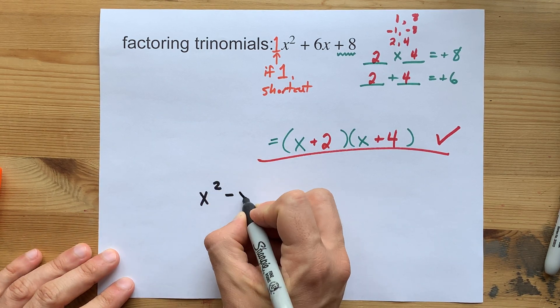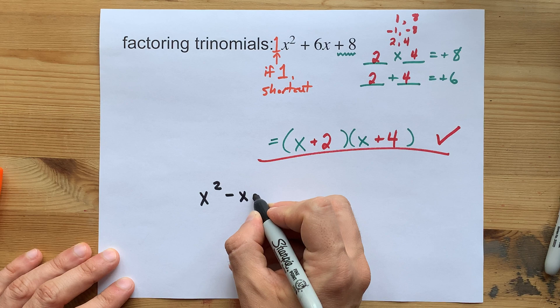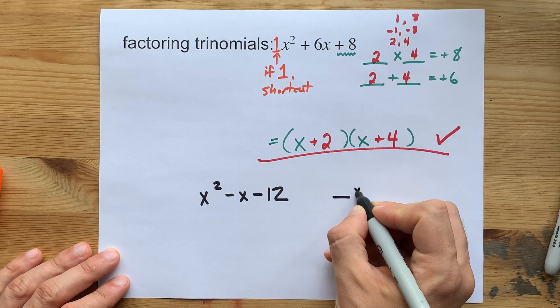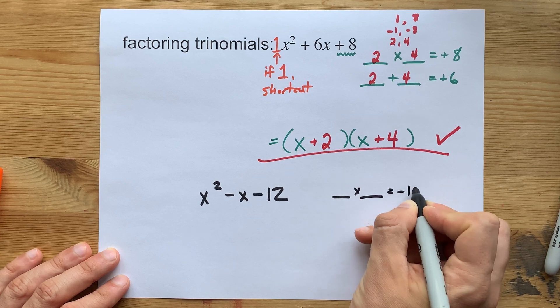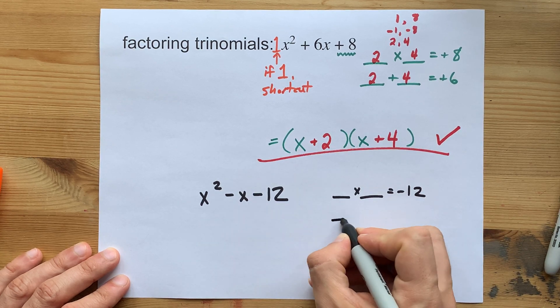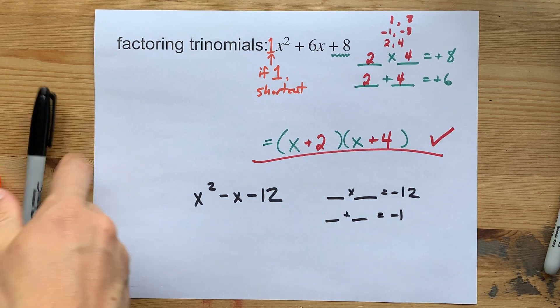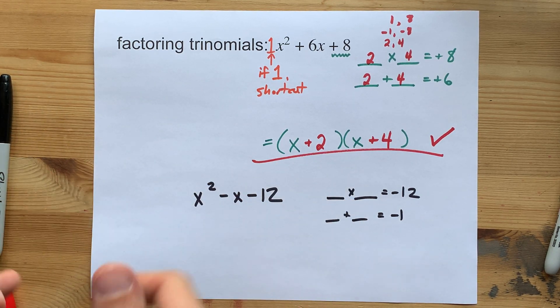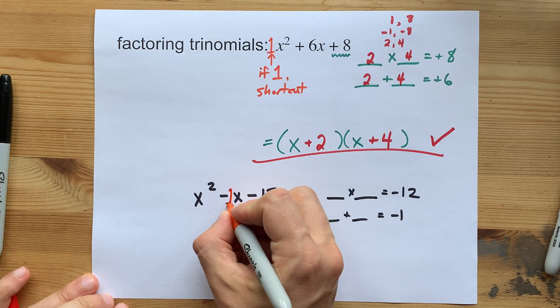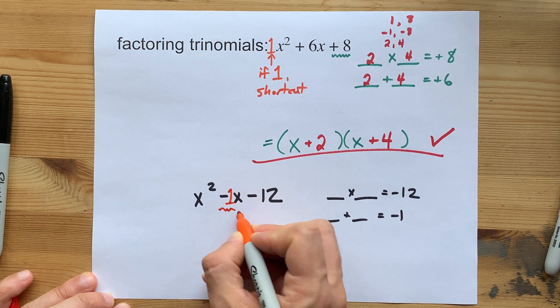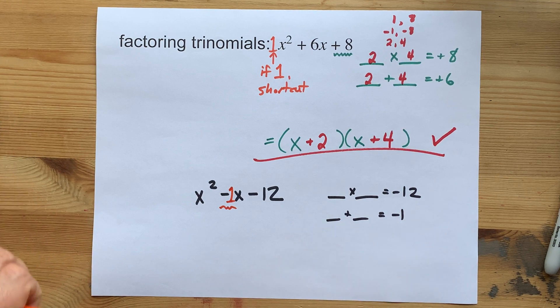If you're factoring x squared minus x minus 12, you're looking for two numbers that multiply to negative 12 and add to negative 1. Note again, because there was nothing written there, we had to assume it was a 1. But it was minus x, so negative 1 is that number we want the two things to add to.